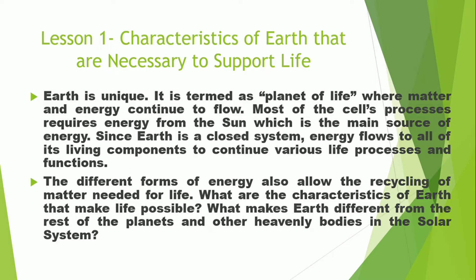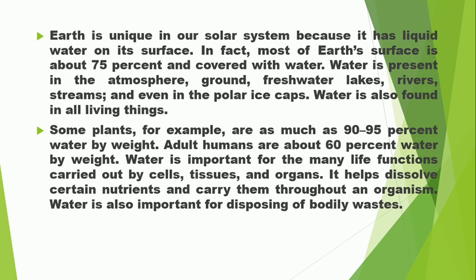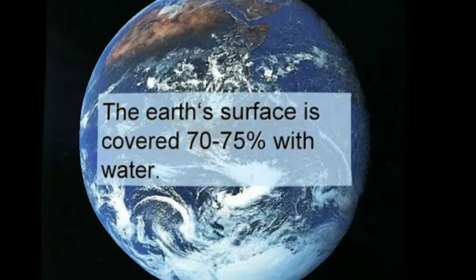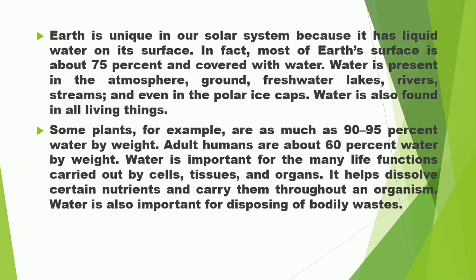What are the characteristics of Earth that make life possible? And what makes Earth different from the rest of the planets and other heavenly bodies in the solar system? Earth is unique in our solar system because it has liquid water on its surface. In fact, most of its surface — about 75% — is covered with water. Water is present in the atmosphere, ground, fresh water, lakes, rivers, streams, and even in the polar ice caps.